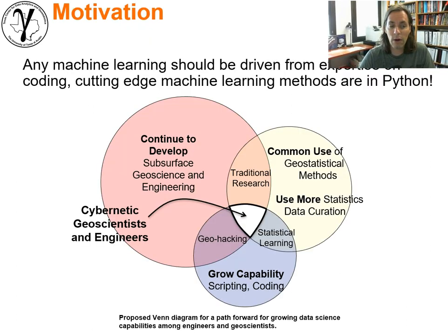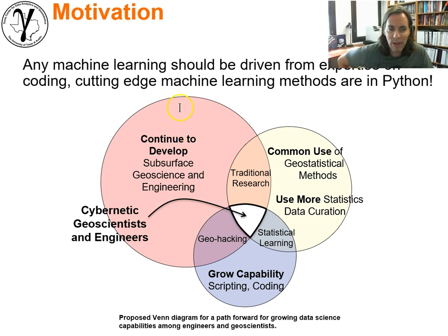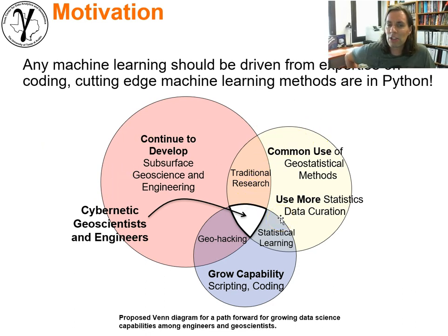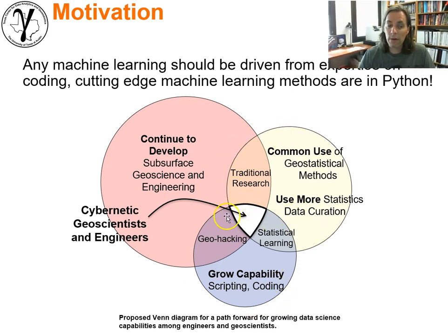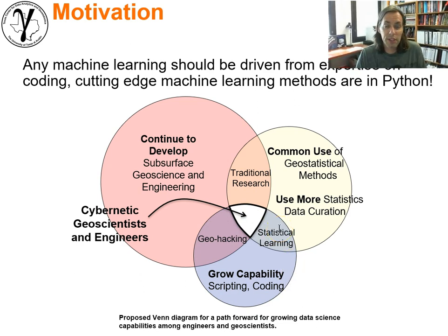Now if we return back to our Venn diagram, where we want to be, we're still missing one piece. We've got the domain expertise right here. We've got the statistics, the fundamental probability concepts right here. We really need to also cover the coding, the scripting, the use of open source tools in order to build these workflows.